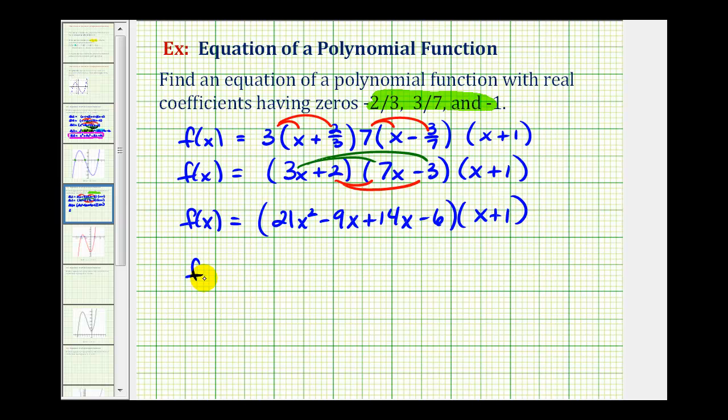Let's simplify this. We have two like terms. f(x) = 21x². Negative 9x plus 14x is plus 5x. Minus 6 times the quantity (x + 1).